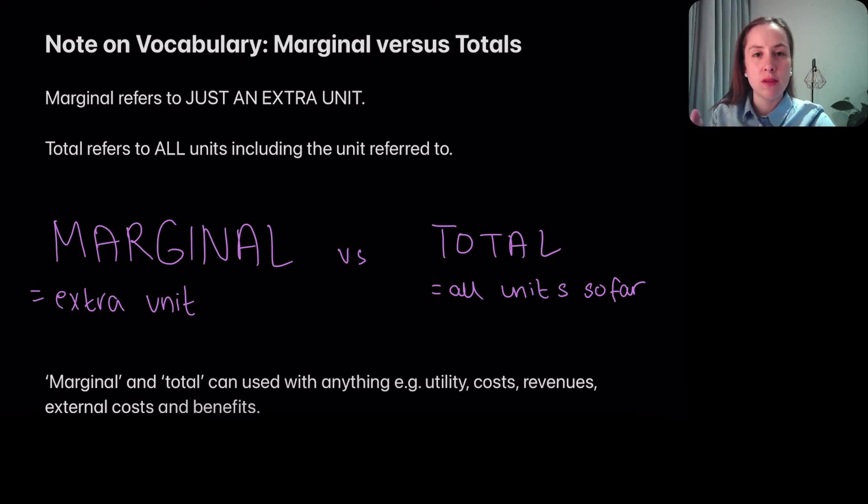Marginal—that word just refers to that extra unit. So if I said marginal revenue, it would mean the revenue from that extra unit, just the extra unit. If I said marginal cost, it would mean the cost to produce just that extra unit. If I said marginal utility, the utility for that extra unit.